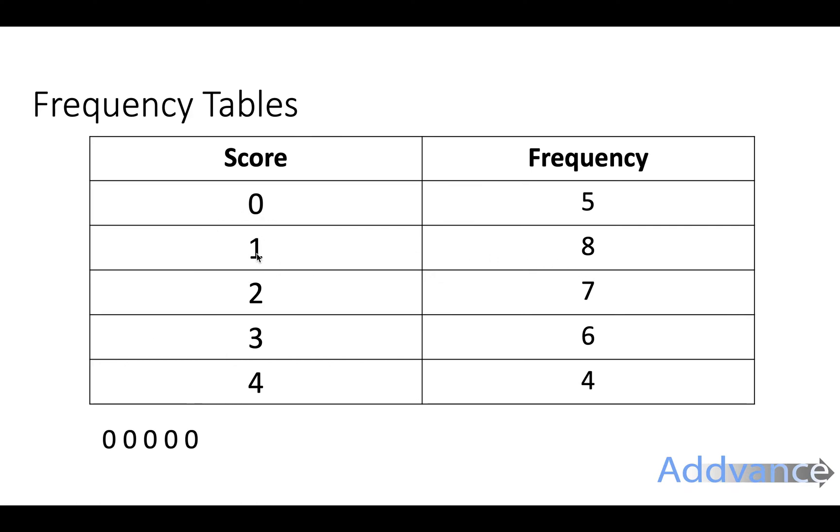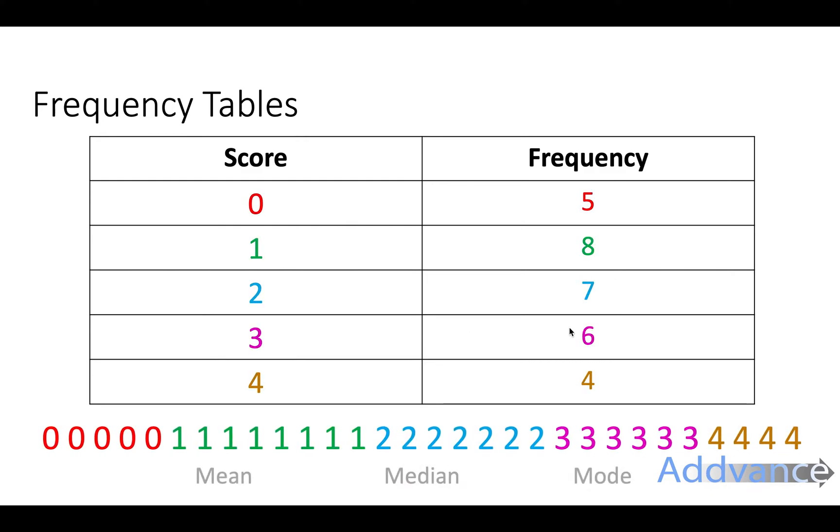Eight people scored one, seven people scored two, six people scored three, and four people scored four points. In this column it tells you the data, and this tells you how often that data occurred. So we know that the score one happens eight times, the score three happened six times, like this.